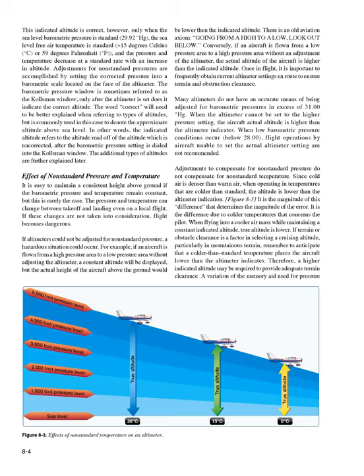This indicated altitude is correct only when the sea level barometric pressure is standard (29.92 Hg), the sea level free air temperature is standard (+15°C or 59°F), and the pressure and temperature decrease at a standard rate with an increase in altitude. Adjustments for non-standard pressures are accomplished by setting the corrected pressure into a barometric scale on the face of the altimeter. The barometric pressure window is sometimes referred to as the Kollsman window. Only after the altimeter is set does it indicate the correct altitude — meaning the indicated altitude read off the altimeter after the barometric pressure setting is dialed into the Kollsman window.